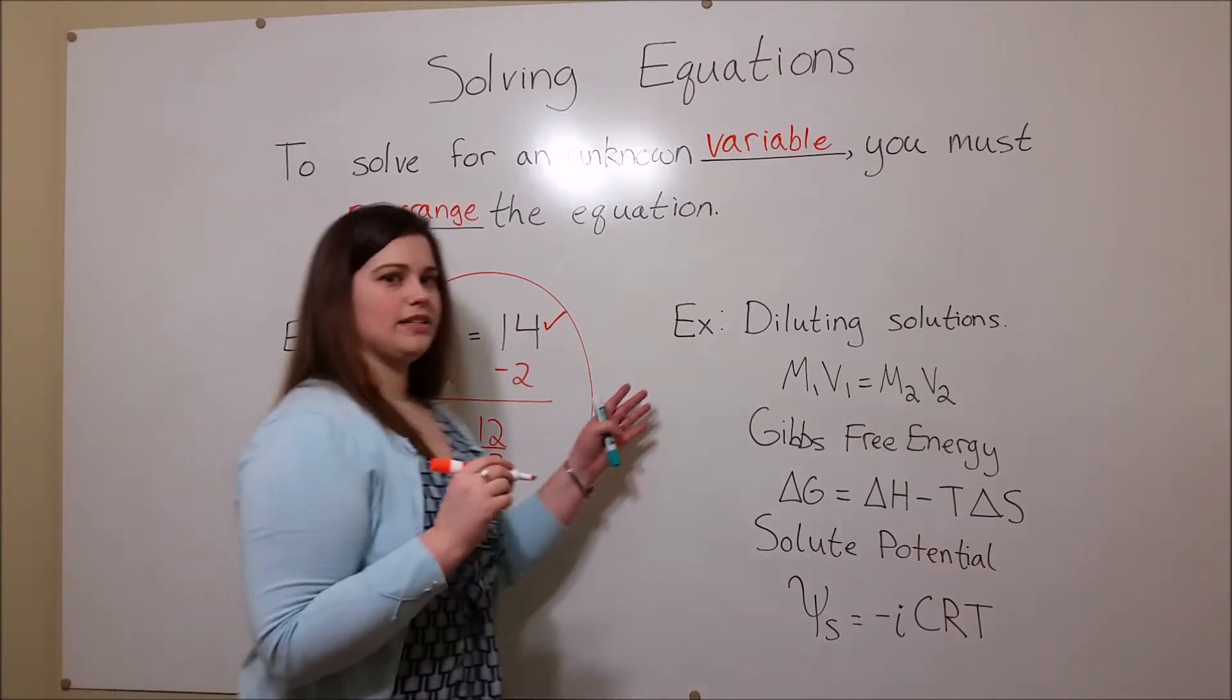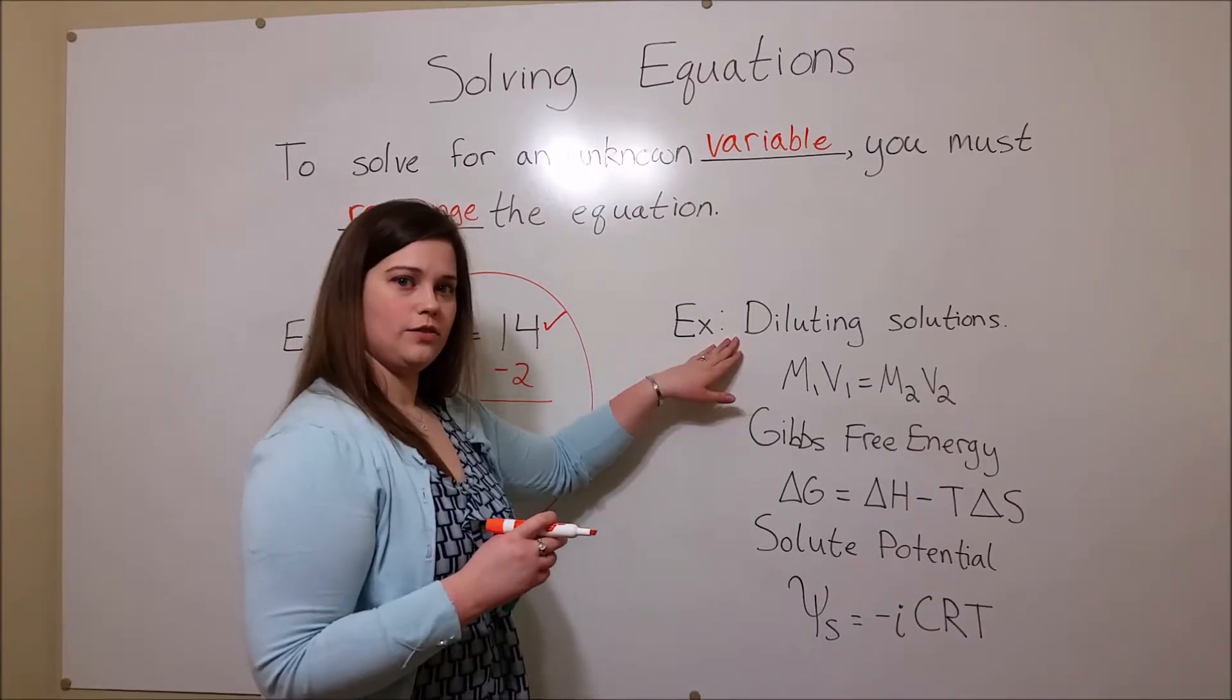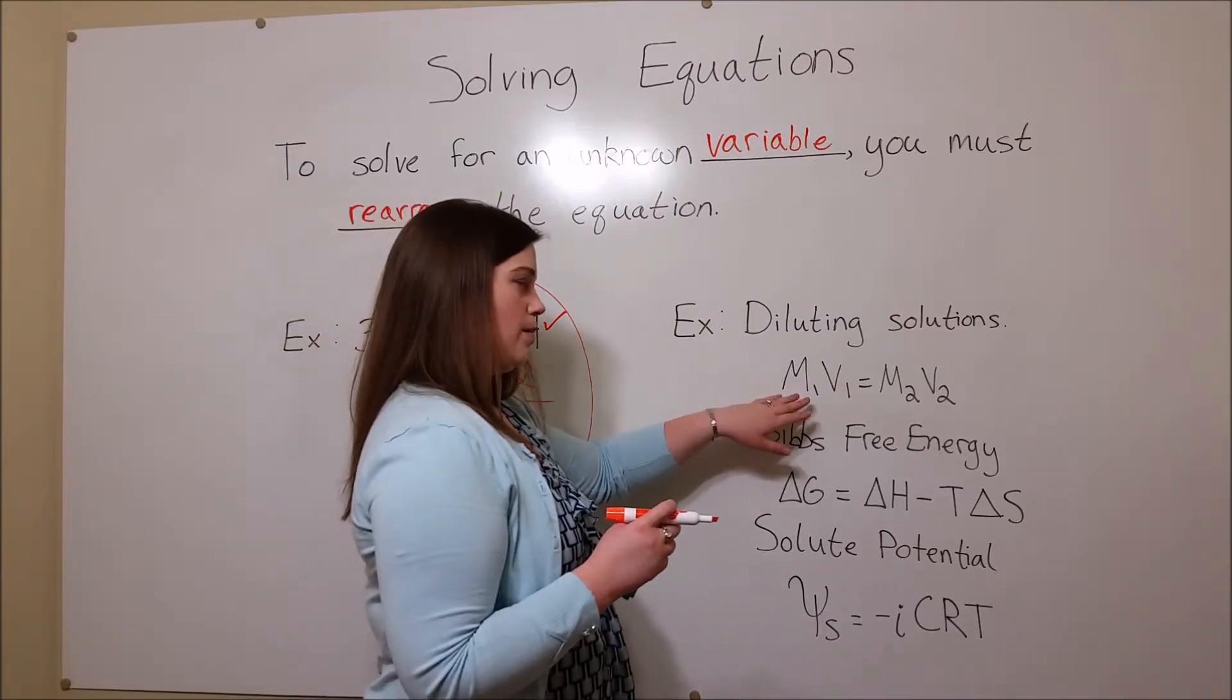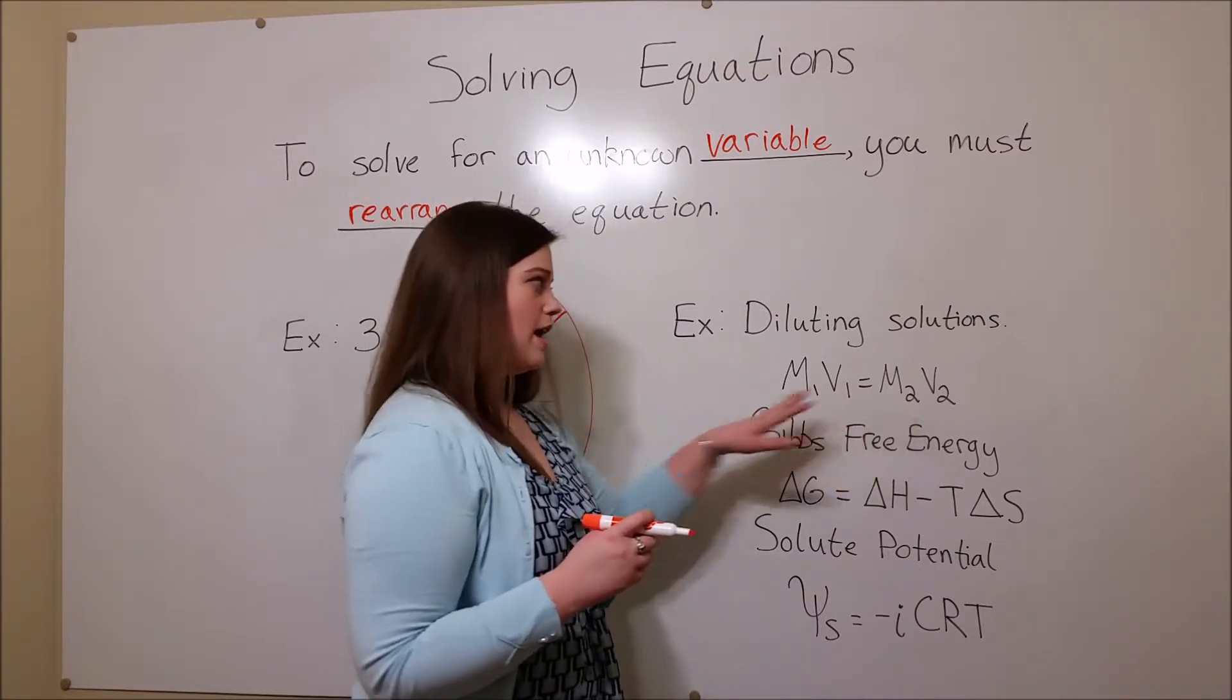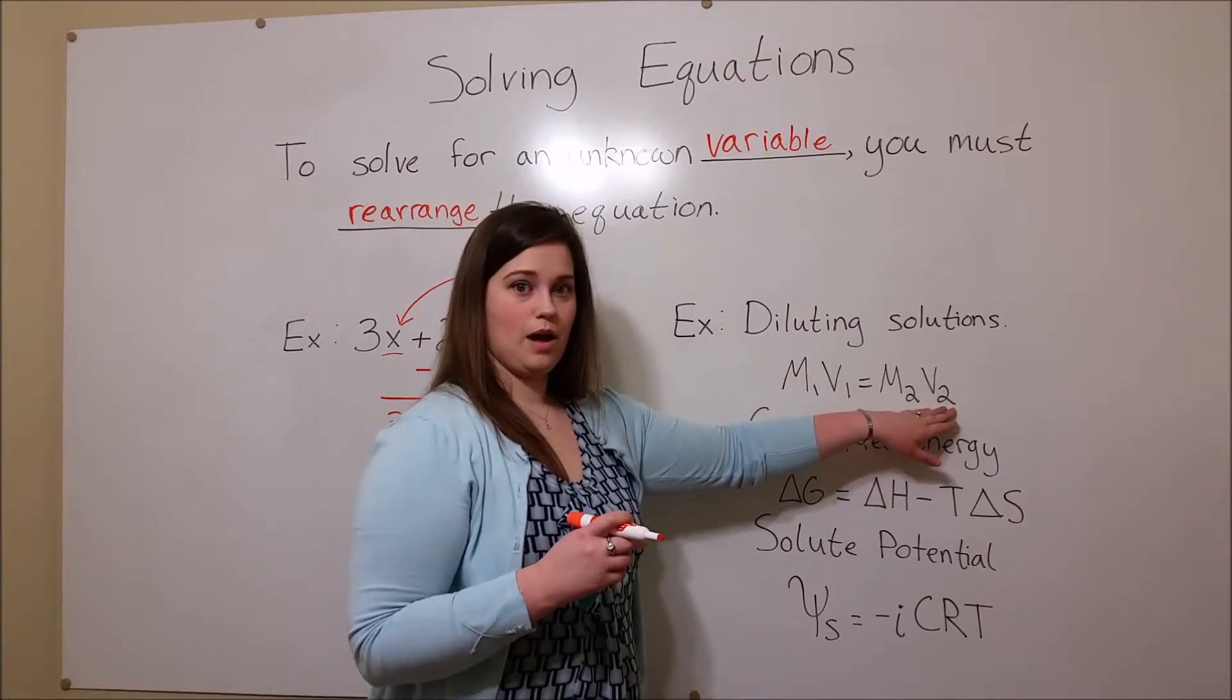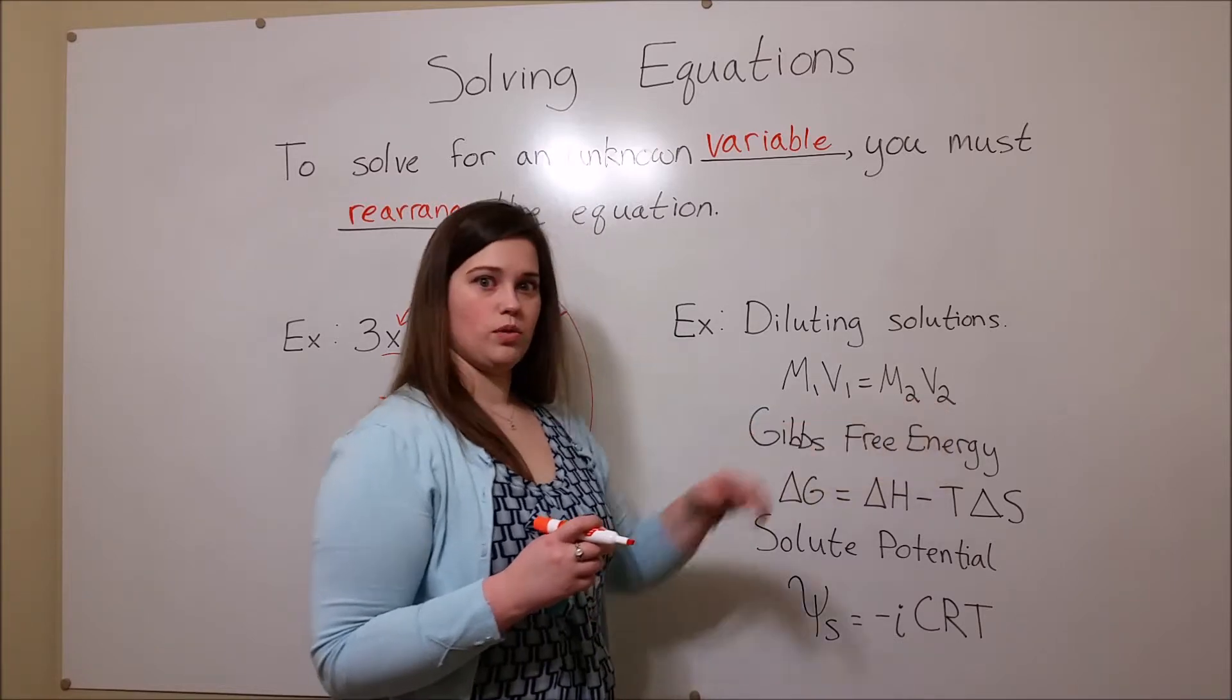Here are some examples of where you might use this in a biology class. Diluting solutions, for example, in a lab situation where you know perhaps the molarity and the volume, and you know the new molarity you want to make, it's by rearranging this equation that you can determine the new volume, so the amount of solvent that you have to add to get to the new molarity.